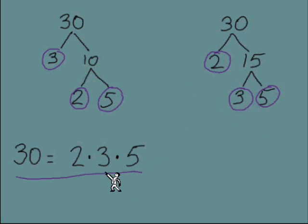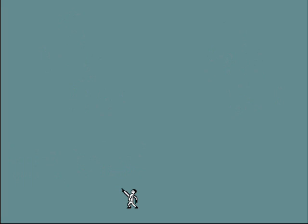And we end up with the same result. So 2, 3, and 5 are the prime factors, the building blocks. It's almost like the DNA for the number 30.